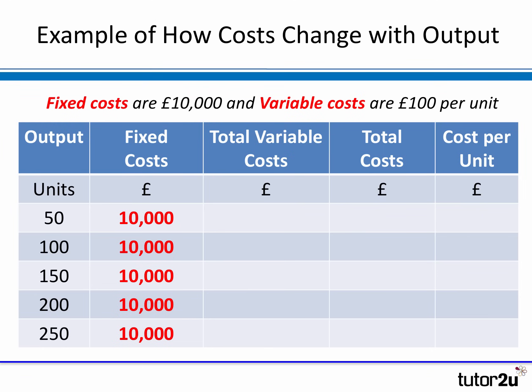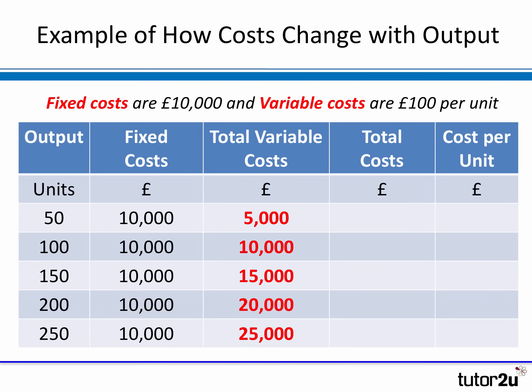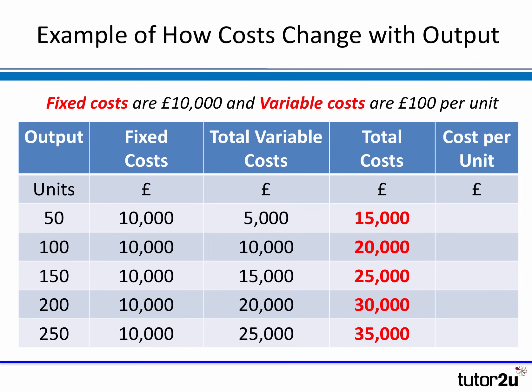In our table here, the business has fixed costs of ten thousand pounds per period and variable costs of one hundred pounds per unit. Fixed costs do not change in relation to output, so whatever the level of production — 50, 100, 150, rising to 250 units — fixed costs remain ten thousand pounds. Variable costs are calculated by multiplying the units by the variable cost per unit of one hundred pounds.